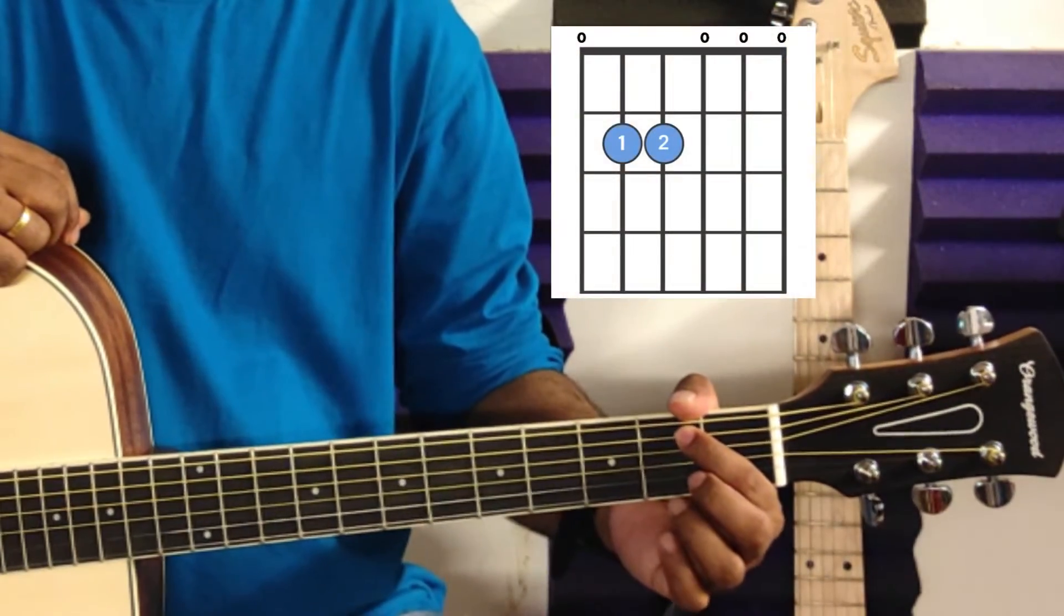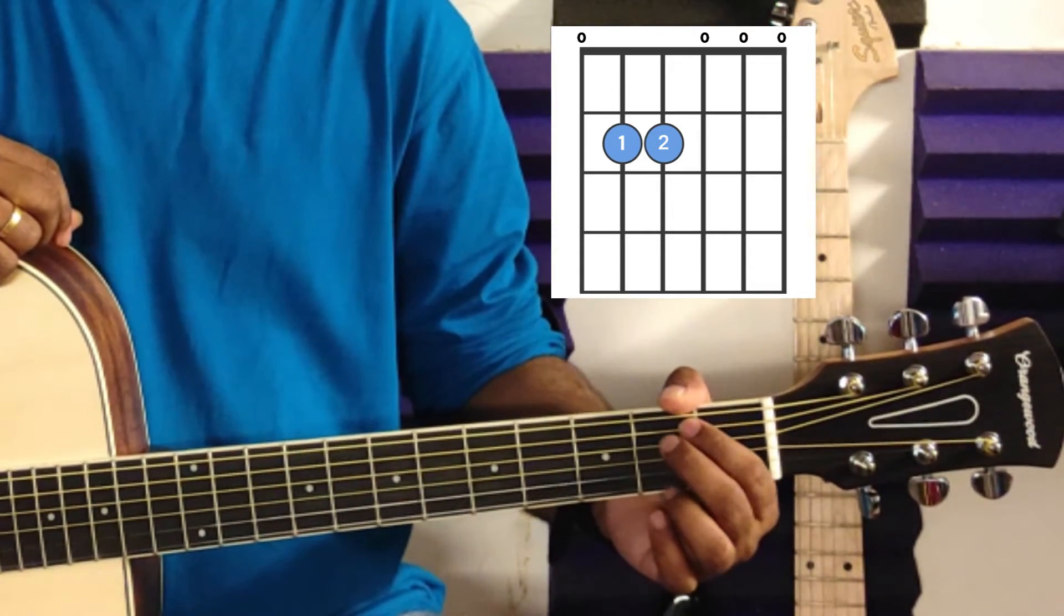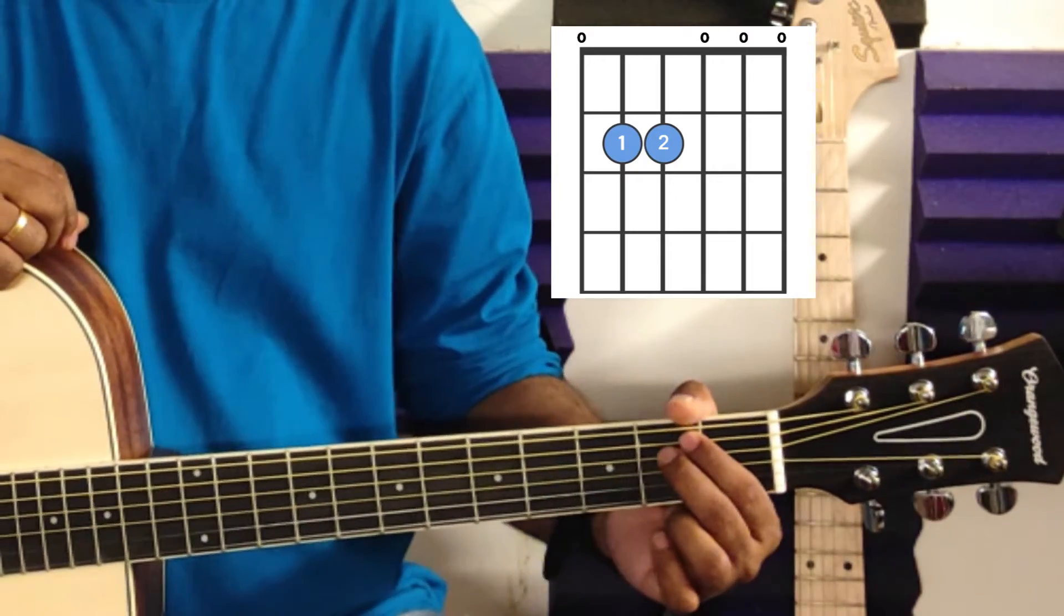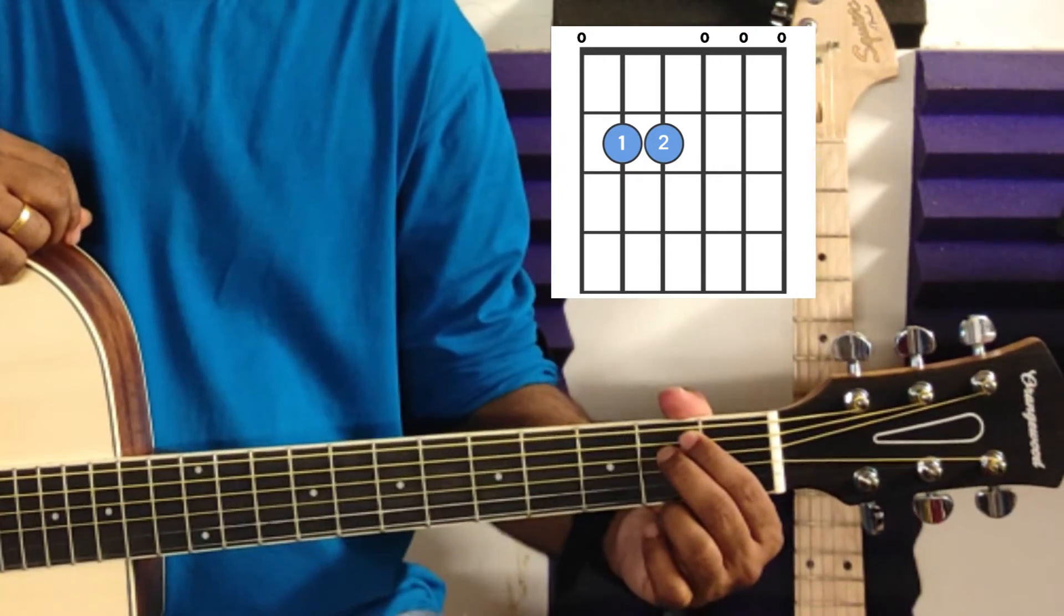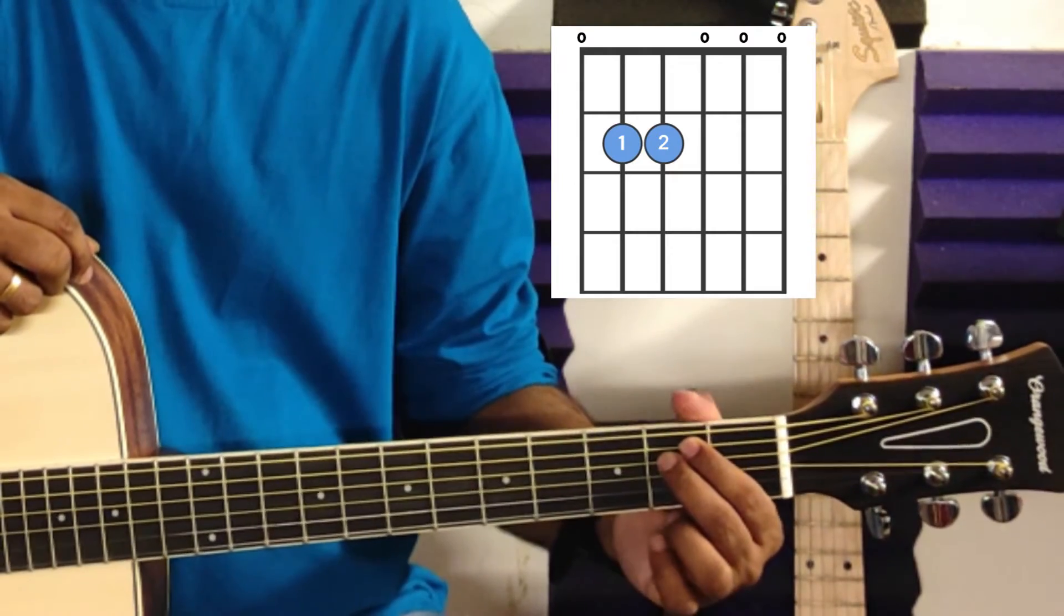index finger on the fifth string, that's A string, second fret, and your middle finger will be on the fourth string second fret. E minor is one of the easiest chords that you can play on the guitar. It's just two notes that you have to hold.